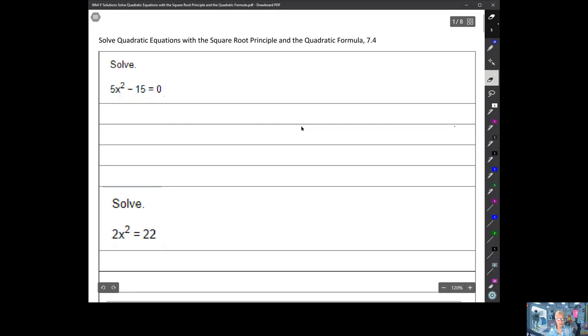Notice that the linear term is missing. In fact, there is no linear term here. Remember the linear term is the power one term. If I were going to write that with all of its terms, I would write 5x² + 0x - 15 = 0.